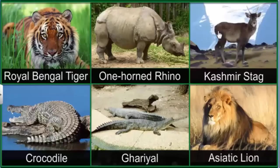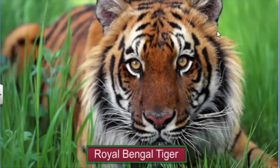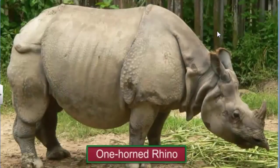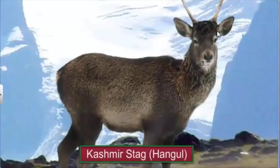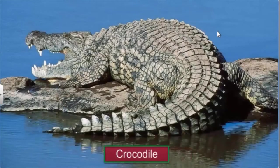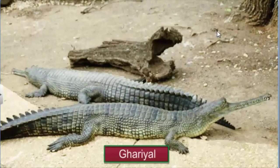The Indian Wildlife Protection Act of 1972 also proposed conservation projects for some specific endangered animals. These include the Royal Bengal Tiger, the one-horned rhinoceros, the cashmere stag — locally called hangul — saltwater and freshwater crocodiles and their cousin the gharial, and the Asiatic lion.